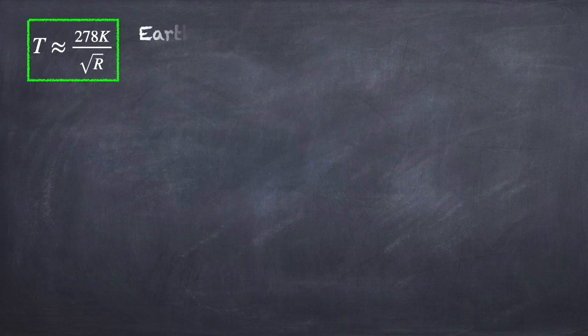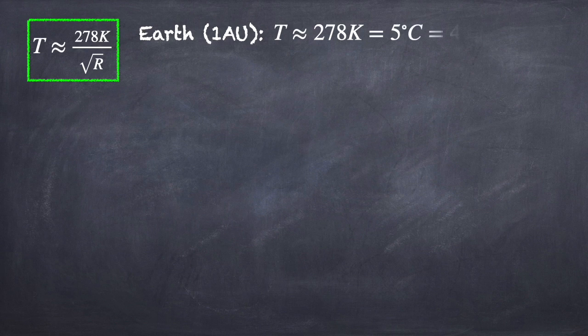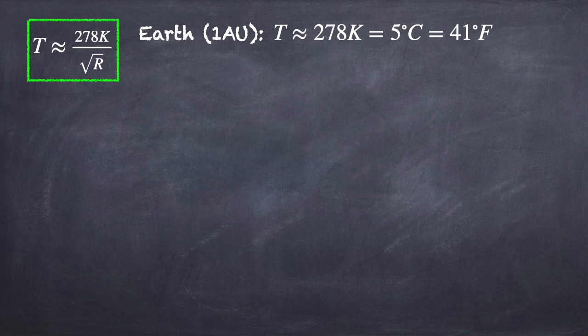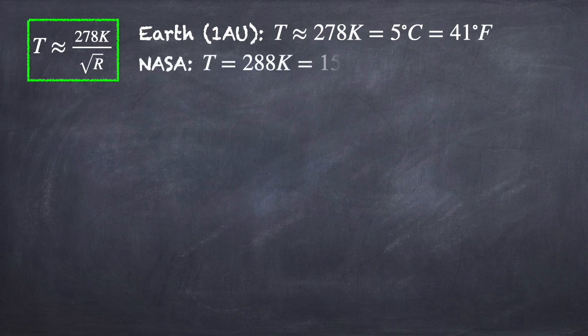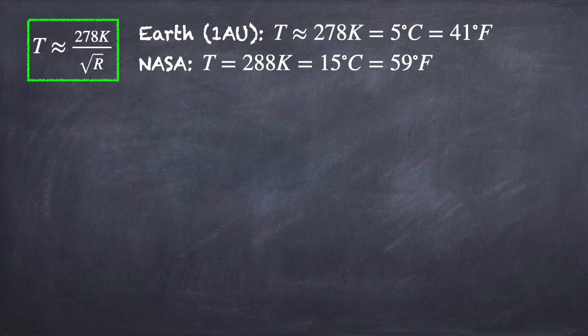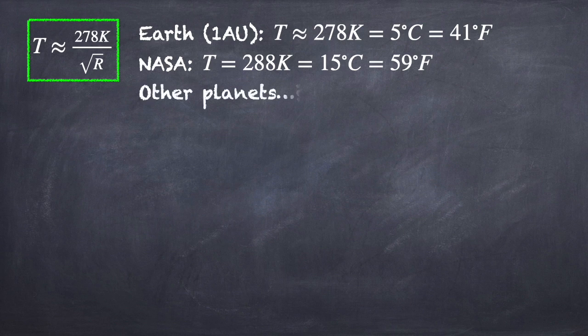Now that we have an expression for the average temperature of a planet as a function of its distance from the Sun, we can plug in some numbers and see how this works. The Earth, by definition, is at a distance of 1 AU, so that means that the average temperature of the Earth should be about 278 Kelvin, which is equal to 5 degrees Celsius or 41 degrees Fahrenheit. That's pretty good, it's certainly in the ballpark of reasonable temperatures found on Earth. According to NASA's website, the average temperature of the surface of the Earth is about 288 Kelvin or 15 degrees Celsius or 59 degrees Fahrenheit. So it's a little warmer than we predicted. But still, we're definitely in the ballpark.